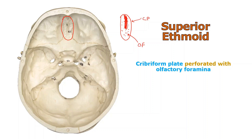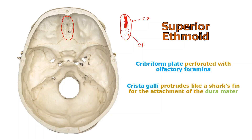Olfactory refers to the sense of smell. When we get to the nervous system, we'll see nerve fibers running through those olfactory foramina, perforating the cribriform plate where they attach to larger nerve structures inside the brain. The crista galli sticks up like a shark's fin — it's very narrow and quite pointy. It's going to allow attachment of parts of the brain covering known as the meninges, especially the tough one known as the dura mater.